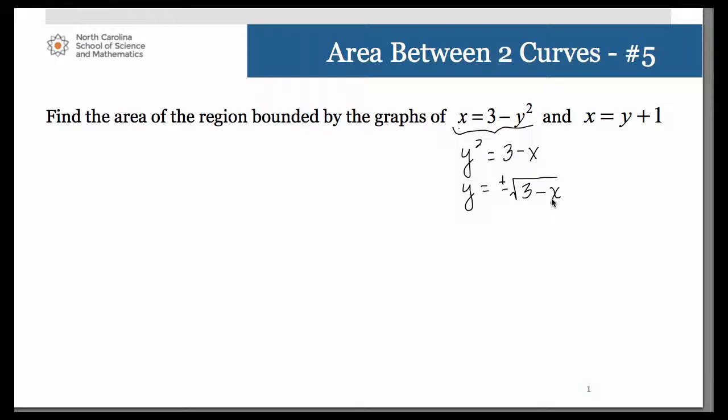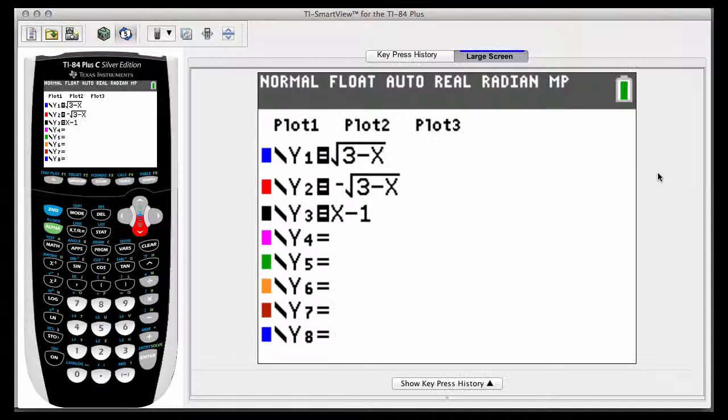The other one of course is just a simple linear equation so that's nice and easy. So when we go to graph these we're going to have to do it as y1, y2 and the two of those I'm going to have as the square root equation and then y3 I'll have as my linear equation. So let's take a look at those. So you'll notice y1 as the square root of 3 minus x, y2 is the negative square root of 3 minus x, and finally y3 is x minus 1.